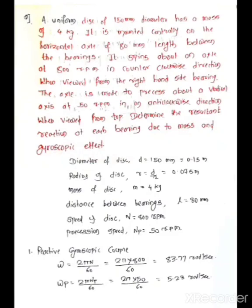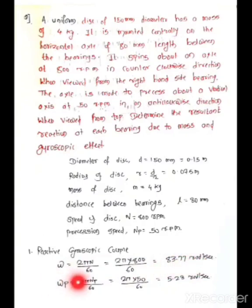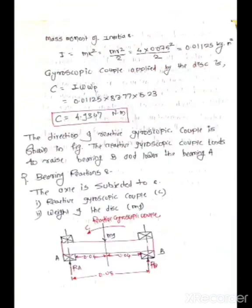First, let's look at the given data. Diameter of the disc is 150 mm, so radius R = D/2 = 75 mm = 0.075 m. Mass of the disc is 4 kg. Distance between the bearings L = 80 mm. Rotational speed of the disc N = 800 rpm and precessional speed NP = 50 rpm. From these, angular speed ω = 2πN/60 = 83.77 rad/s and precessional angular speed ωP = 2πNP/60 = 5.23 rad/s.